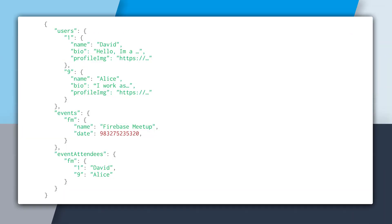So how would we do this in the Firebase Database? The Firebase Database structures data as JSON. Our top level keys are users, events, and event attendees. Event attendees is how we show which users are going to which events. The FM key is the same key as the events key, so all of the users underneath FM in the events keys are the same users going to that event.